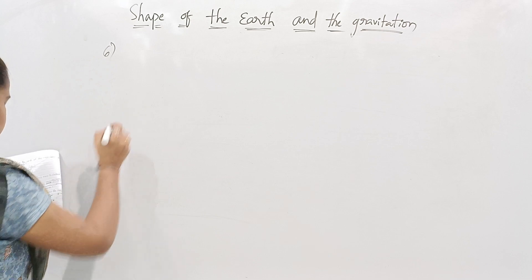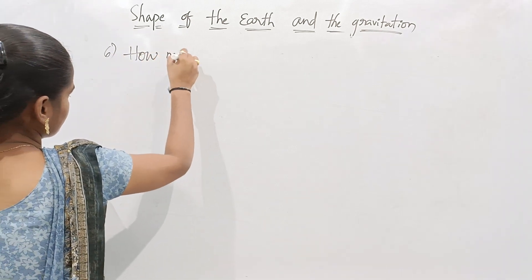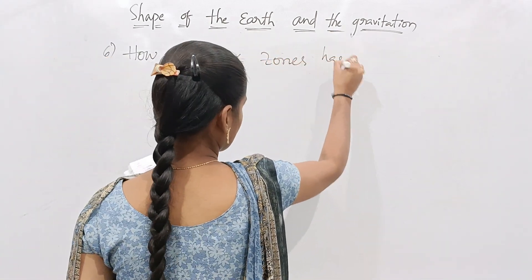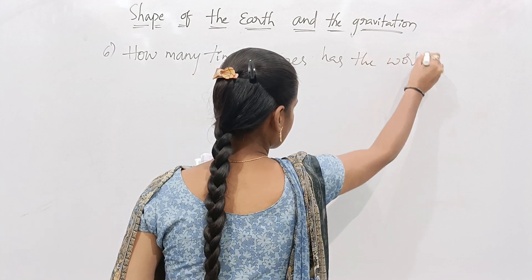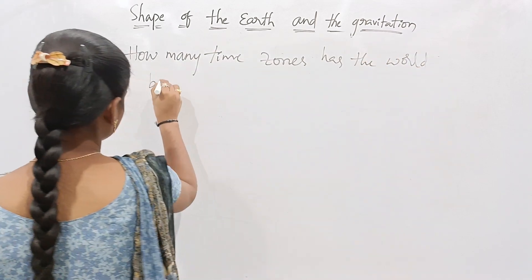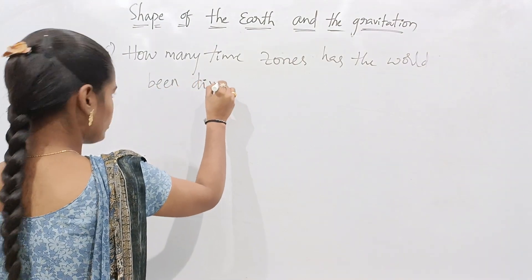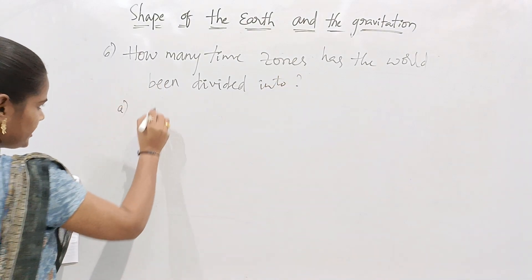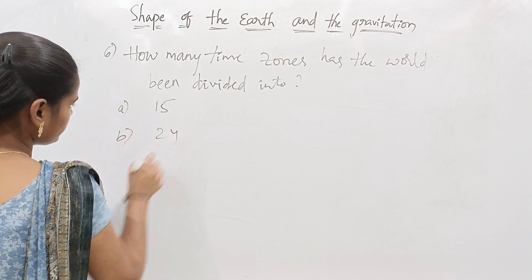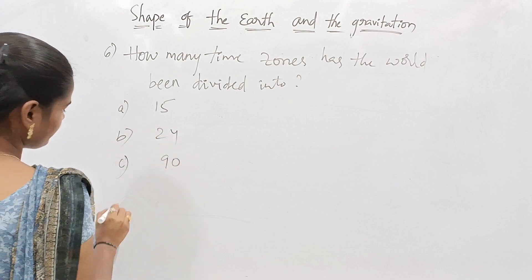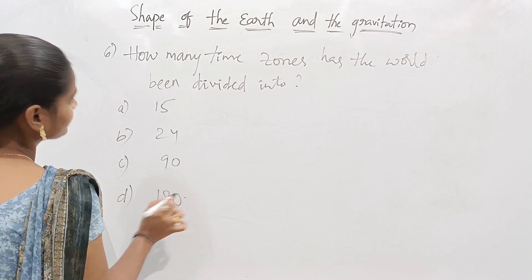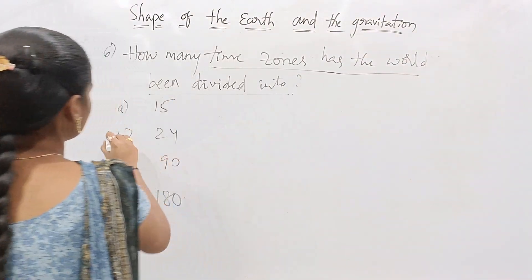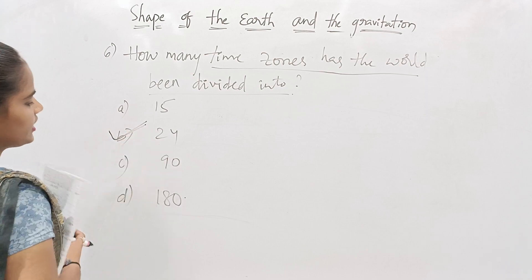The sixth question is: how many time zones has the world been divided into? Option A is fifteen, Option B is twenty-four, Option C is ninety, and Option D is one hundred eighty. We all know the world has been divided into twenty-four time zones, so Option B is the correct answer.